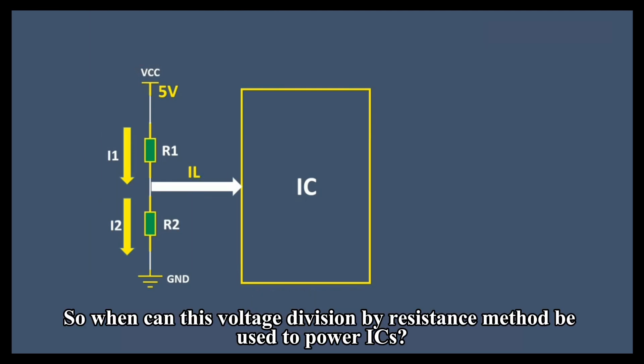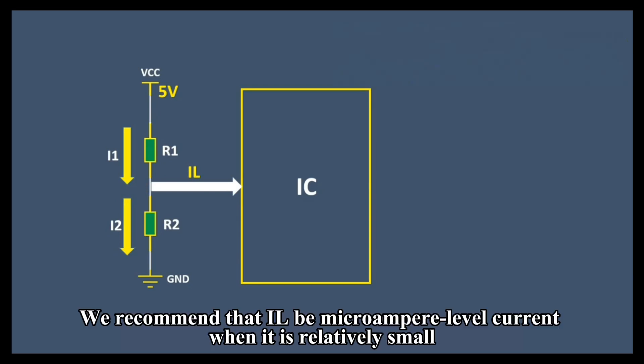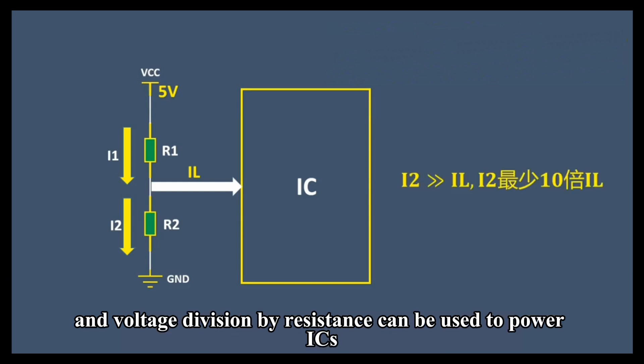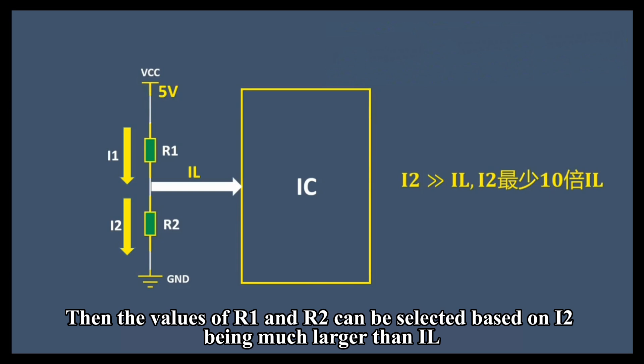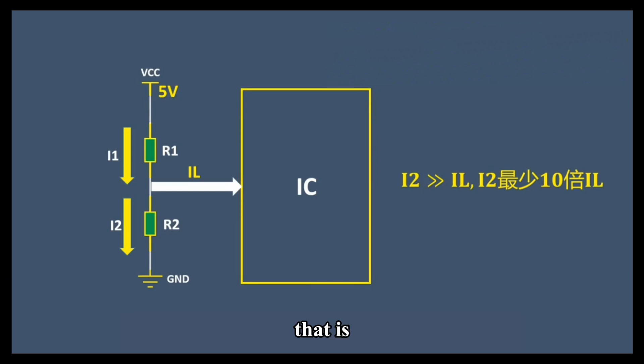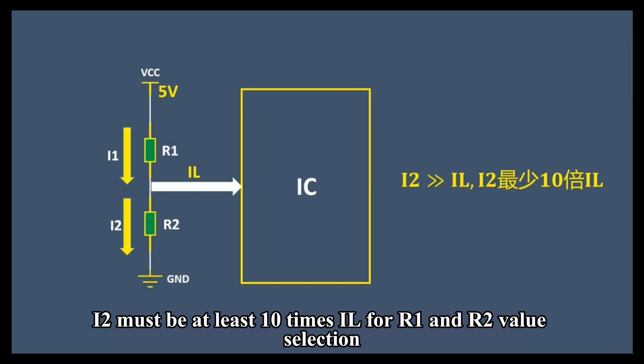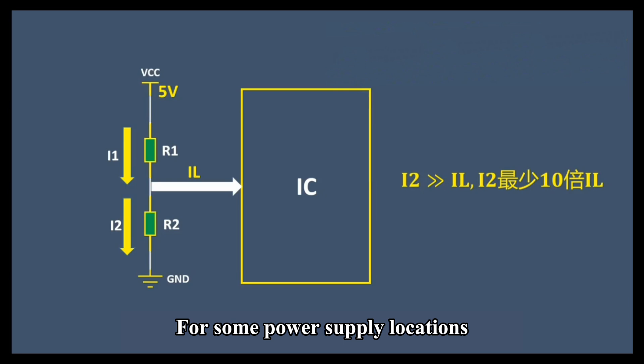So when can this voltage division by resistance method be used to power ICs? We recommend that IL be microampere level current when it is relatively small, and voltage division by resistance can be used to power ICs. Then the values of R1 and R2 can be selected based on I2 being much larger than IL, that is, I2 must be at least 10 times IL for R1 and R2 value selection.